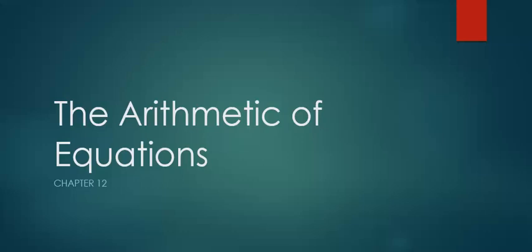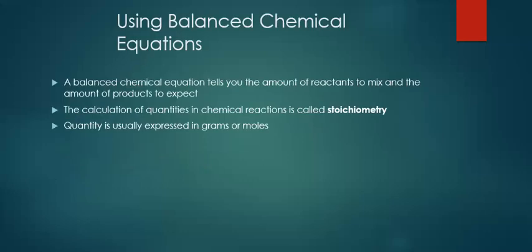The arithmetic of equations. A balanced chemical reaction tells you the amount of reactants to mix and the amount of products to expect. We're going to do some calculations of quantities in chemical reactions. This is called stoichiometry.